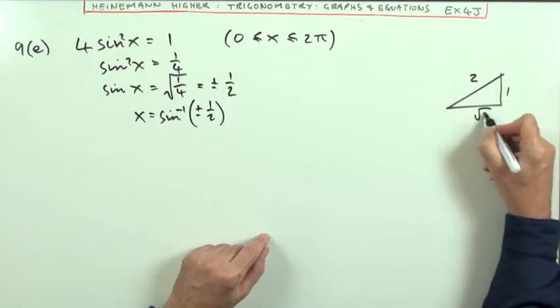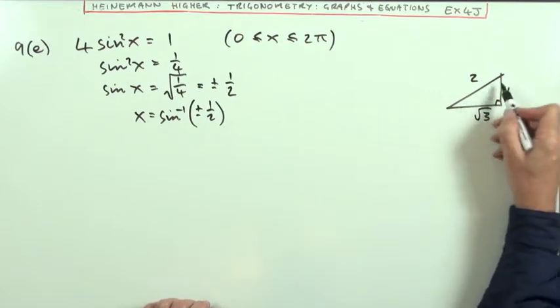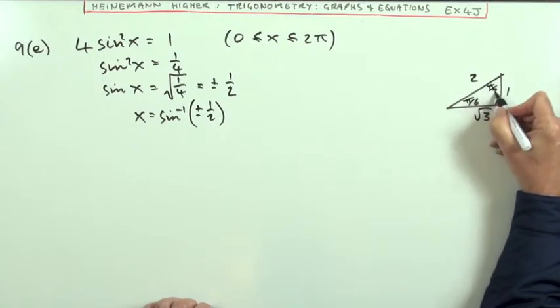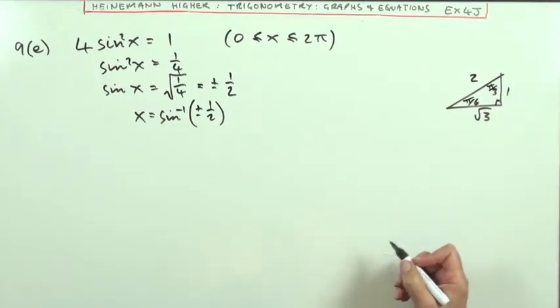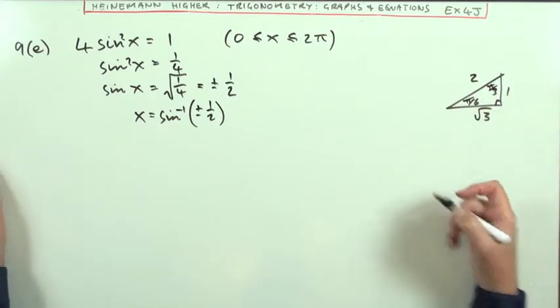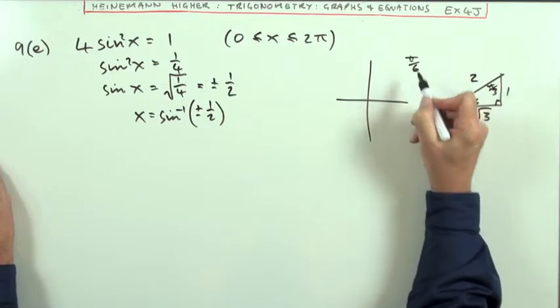1, 2, root 3. You can just think in degrees if you like. That's the 30, that's the 30-60 triangle. Or if you like, that's the π upon 6, π upon 3 triangle. So for this one, the sine, that's this one here, it's going to be π upon 6. So it's π upon 6 that I've got that I'm going to put into the CAST diagram.